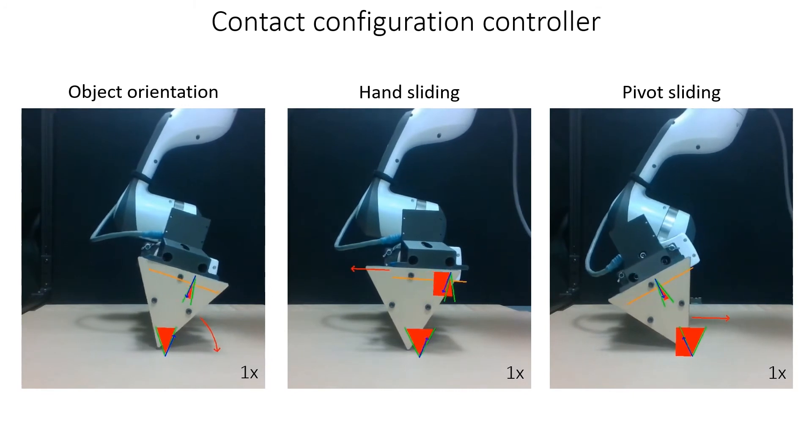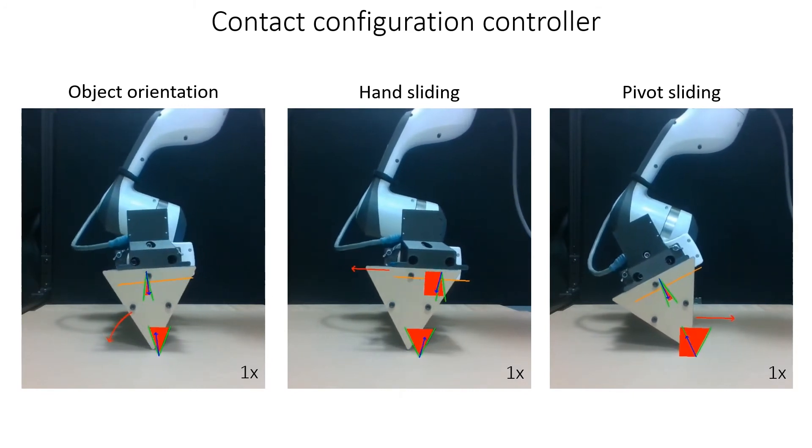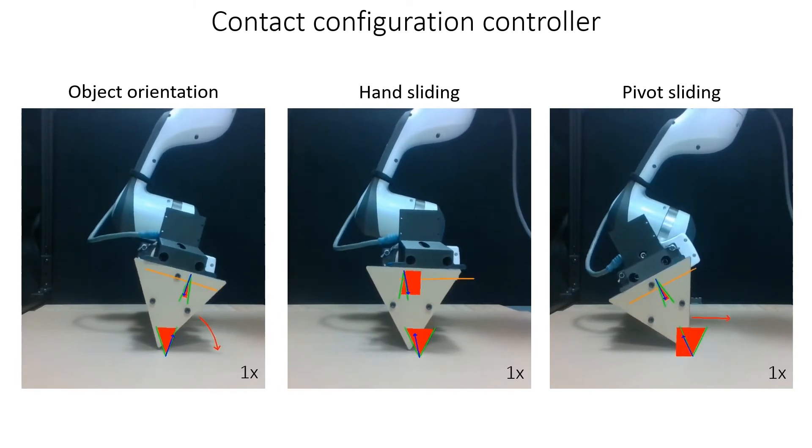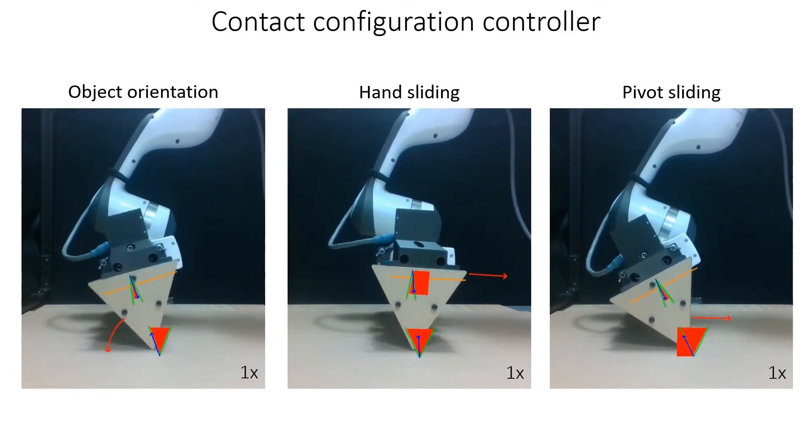It reduces pose error by moving the impedance target in a direction that induces the desired motion. For example, along the contact tangent to induce hand sliding.